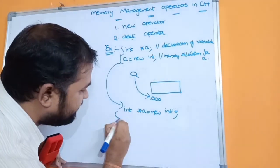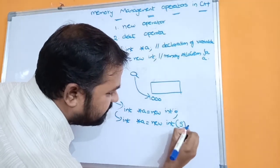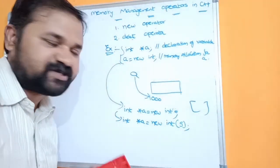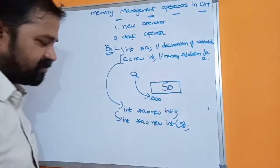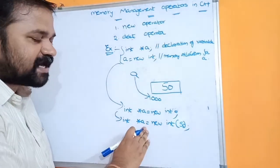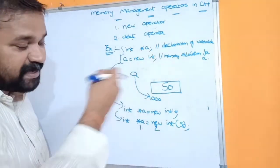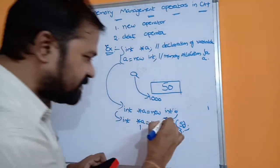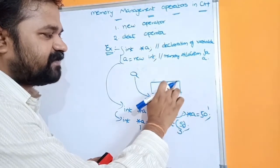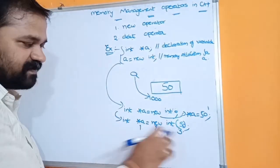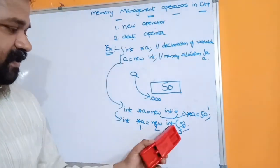We also have one more syntax where we can give an initial value: int *a = new int(5). If we use square brackets instead, then it will become an array with 5 elements. When we use the parenthesis syntax, 5 will be stored in a. So this is the most commonly used syntax: int *a = new int(50), which performs declaration, memory allocation, and initialization of the variable all in a single statement.